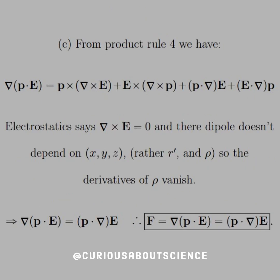For C, we see that from product rule four, we have the gradient of P·E is equal to all these possible interchanging of cross products and a couple dot products. Here, we said in the electrostatic case that ∇×E equals zero.